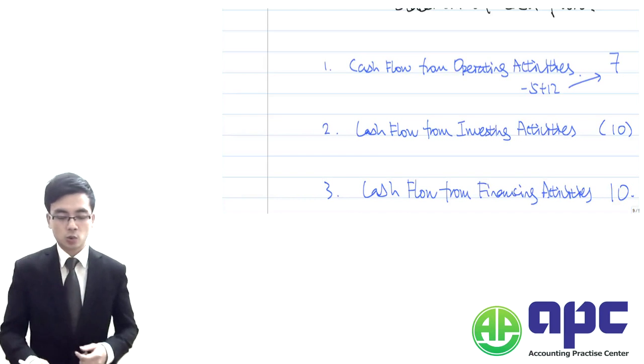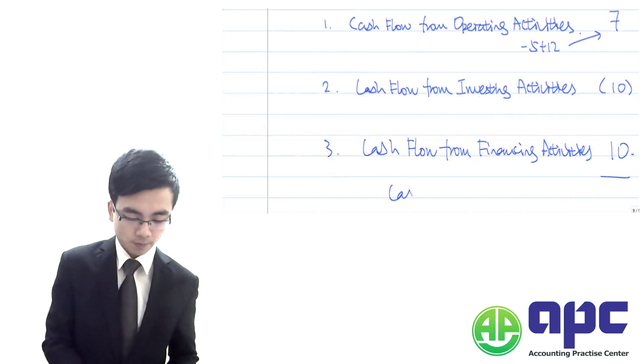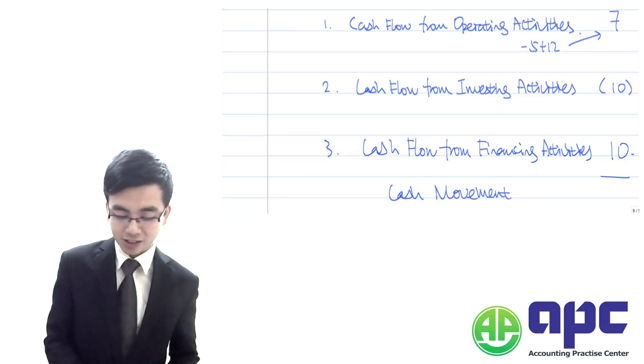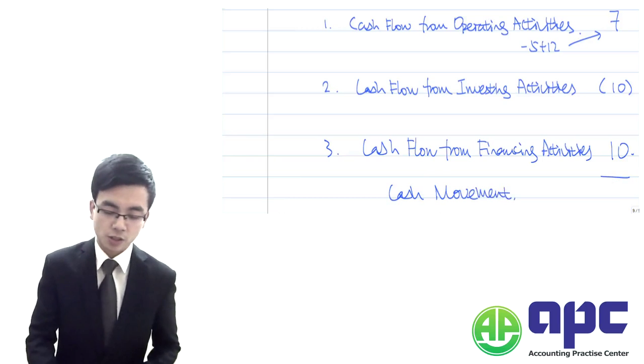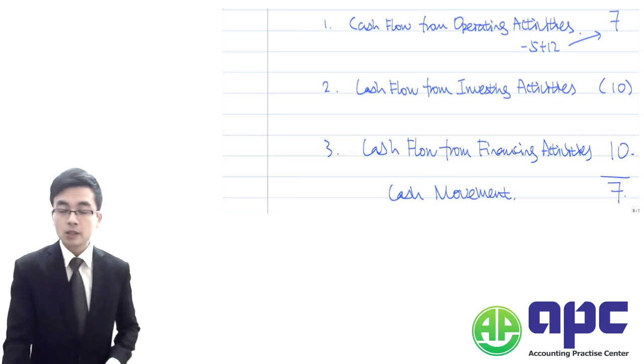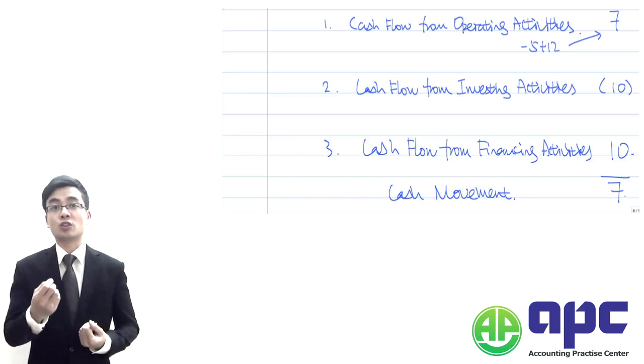When summarizing those all together, that's called the cash movement, cash and cash equivalents movement. Summarizing those together, that gives you 7. This means it's the changes in the cash balances during the year.